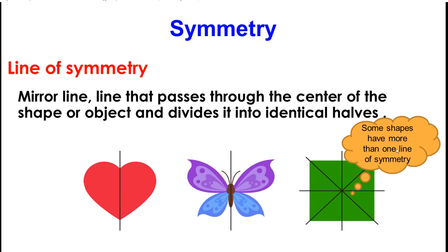Some shapes, however, have more than one line of symmetry. Take, for example, the square. It has got a line of symmetry. How many lines of symmetry? 1, 2, 3, and 4 lines of symmetry.